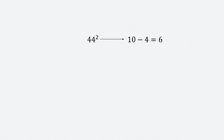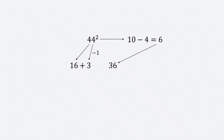Let's look at 44 squared. So, 10 minus 4 gives 6 — it's 6 that we'll square. Square 6, you get 36. Then we square 4 to get 16. Now, we subtract 1 from 4, and that's 3. It's 3 that we add to 16. The last two digits will be 36, and the first two will be 19. So, the square of 44 is 1936.